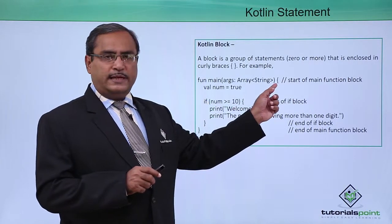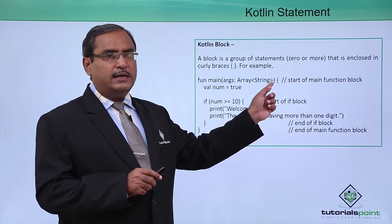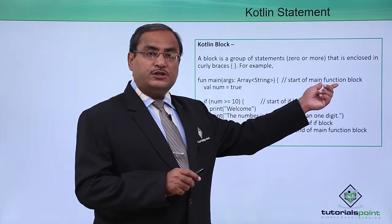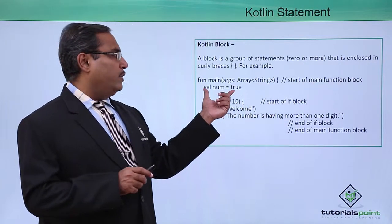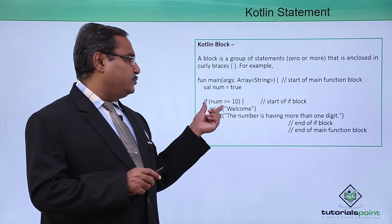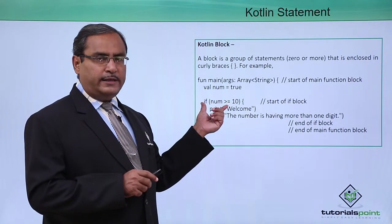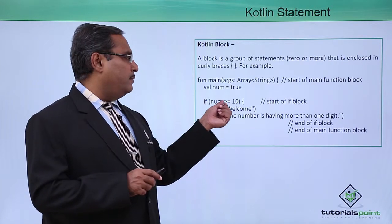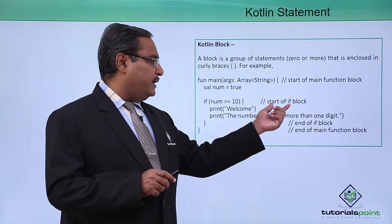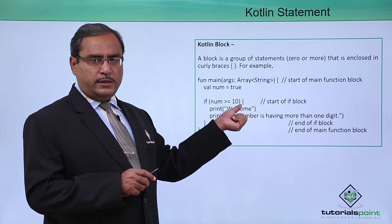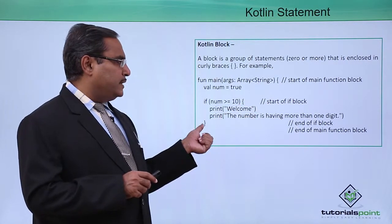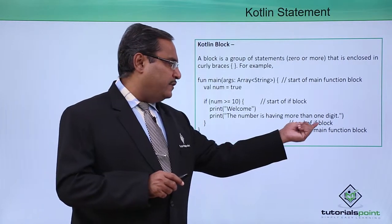Here one curly brace is getting initiated — that is the start curly brace, which is the start of the main function block. Here one variable has got defined of Boolean type. Then there is one if statement — if num is greater than or equal to 10. It is the start of the if block because one curly brace is opening here, and this curly brace is closing — that is the end of the if block.